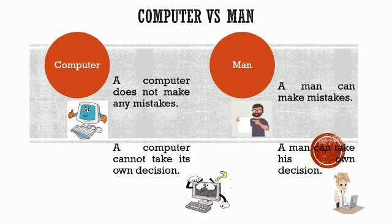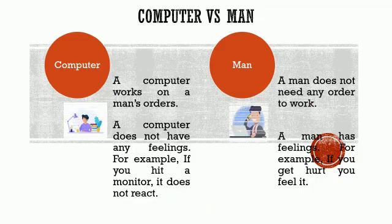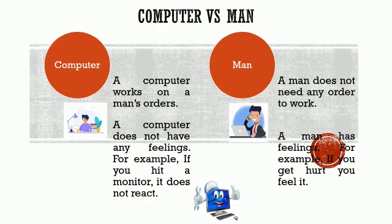A computer works on a man's order, but a man does not need any order to work. A computer does not have any feelings — for example, if you hit a monitor it does not react and will not cry. But a man has feelings — if you get hurt, you feel it and may start crying. I hope you are very clear about the differences between a computer and a man, and the uses of a computer.